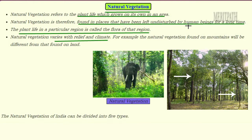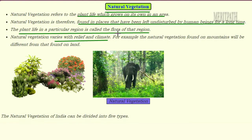Natural vegetation is found in places that have been left undisturbed by human beings for a long time. The plant life of those forests or that region is known as the flora. Plants are always referred to as the flora of that region, and these plants vary with reference to relief and climate. Climate means weather, and relief refers to the difference in elevations on a surface.